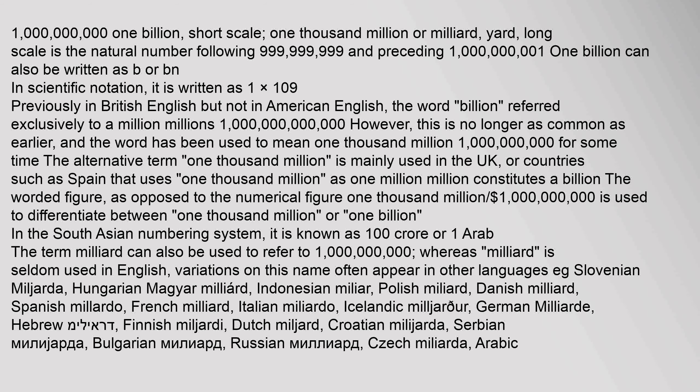Previously in British English, but not in American English, the word billion referred exclusively to a million millions — 1 trillion. However, this is no longer as common, and the word has been used to mean 1,000 million for some time. The alternative term '1,000 million' is mainly used in the UK or countries such as Spain, where 1,000 million constitutes a billion. The worded figure '$1 billion' is used to differentiate between 1,000 million and 1 billion.